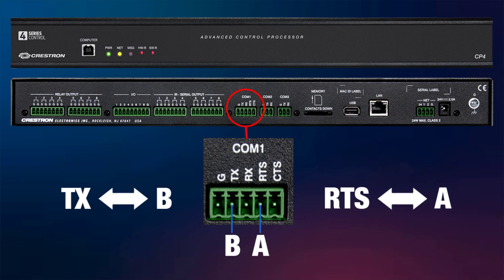Before we move on, let's quickly cover how to wire the Crestron COM port to the device. From the Crestron side, connect the TX pin to port B on the Modbus device, and connect RTS to port A.